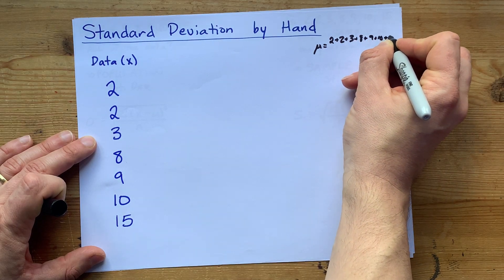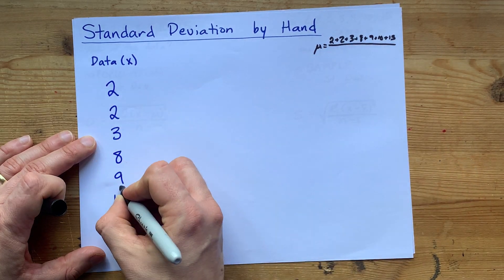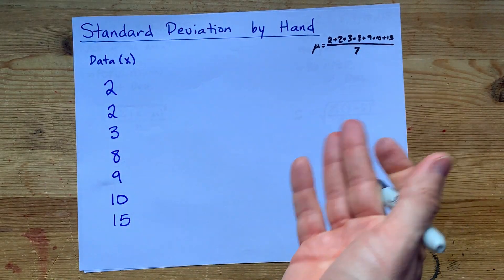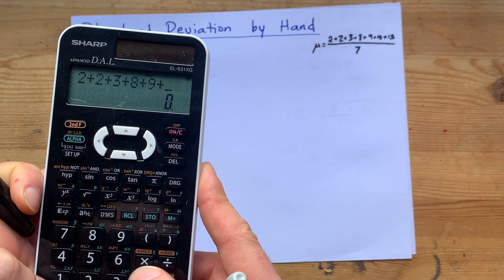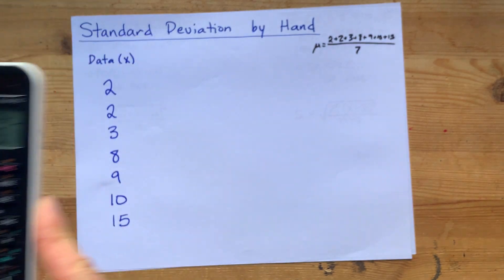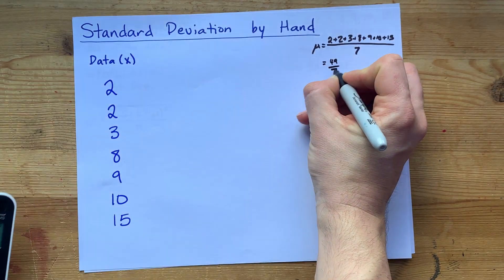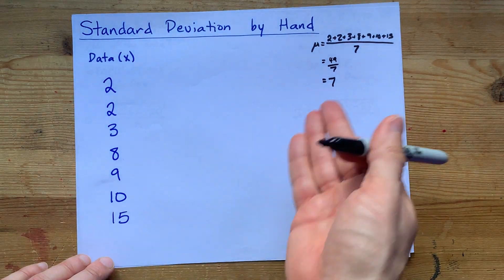There are seven numbers. Now you could add those by hand if you wanted to. For quickness, 2 plus 2 plus 3 plus 8 plus 9 plus 10 plus 15 gives me 49. Divided by 7, apparently the average or mean of these is 7.